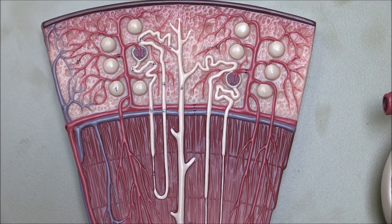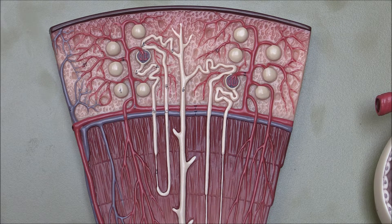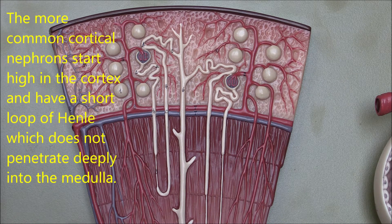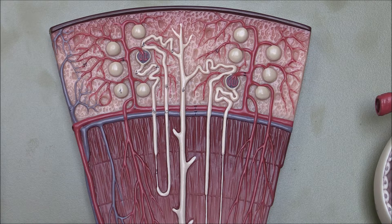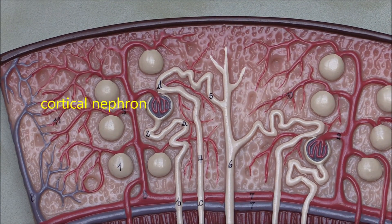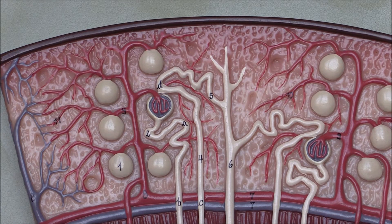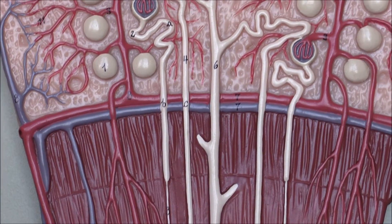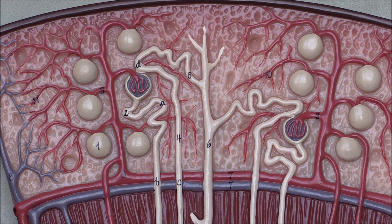There are basically two types of nephron: cortical nephrons and juxtamedullary nephrons. The cortical nephrons are in the outer part of the cortex and tend to have relatively short loops. We can trace a cortical nephron and see that the corpuscle is in the outer part of the cortex, with a relatively short loop before it drains back into the collecting duct. 80 to 85 percent of nephrons are these cortical type nephrons.